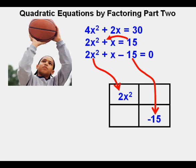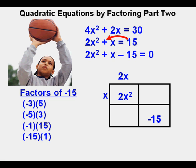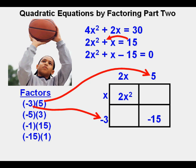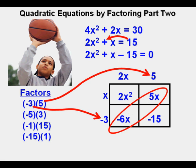He sets up the box and places 2x squared in the upper left corner and negative 15 in the lower right corner. He puts 2x on the top and x to the side as factors of 2x squared. He sets up a list of factors for negative 15: negative 3 and 5, negative 5 and 3, negative 1 and 15, and negative 15 and 1. He tries the first two factors, putting 5 on top and negative 3 to the side. That gives 5x in the upper right and negative 6x in the lower left; combining gives negative x, which does not equal x.